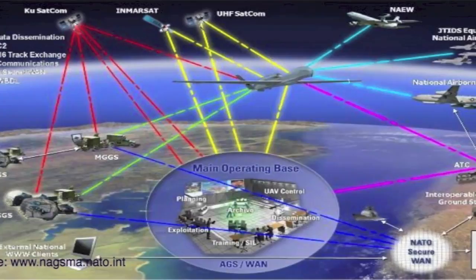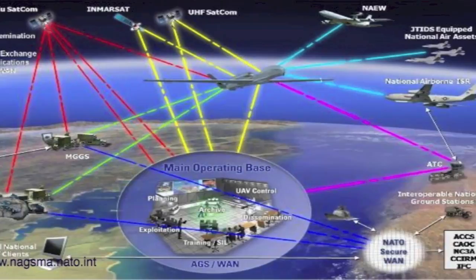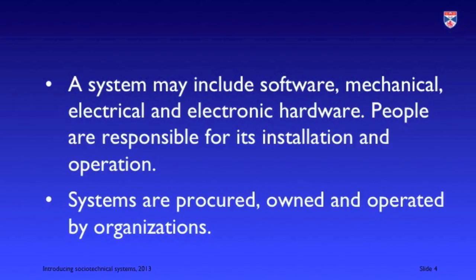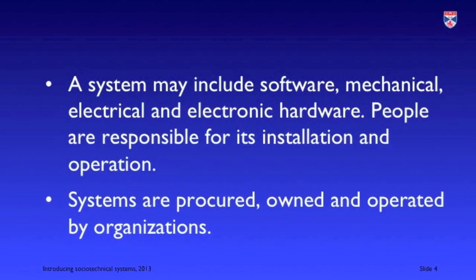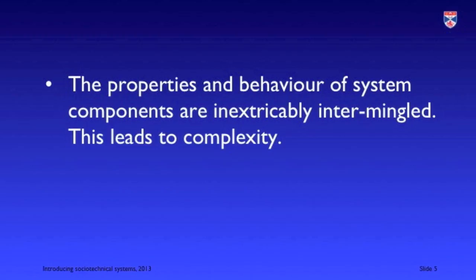This is an example of a military system which is used for ground surveillance. There are lots of different components — hardware and software components as well as people involved in the system — and they interact to provide the capability of ground surveillance across a large area. Systems may include electronic and mechanical hardware, software and computers, and people are responsible for their installation and operation. Generally speaking, they're used by organizations — often quite large organizations — which are responsible for procuring and operating these systems. Systems have lots of components that interact in complex ways, sometimes in ways we don't fully understand, and it's the interaction of components that leads to system complexity.